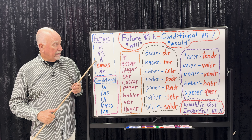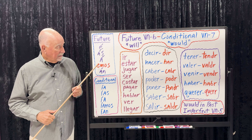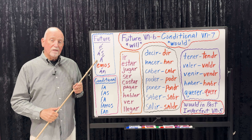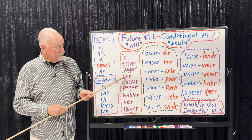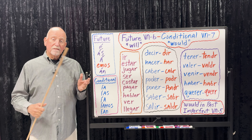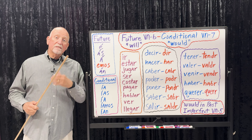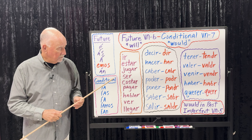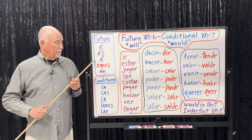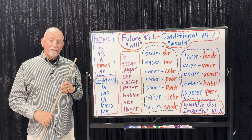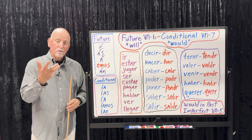Ser: 'It will be fun' — será divertido. 'It will be difficult' — será difícil. 'We will be friends' — seremos amigos. 'We will be neighbors' — seremos vecinos. Costar: 'It will cost a lot' — costará mucho. 'They will cost a lot' — costarán mucho.